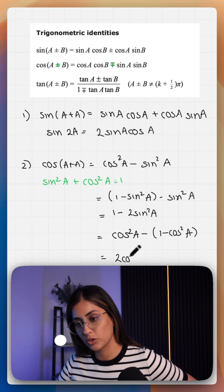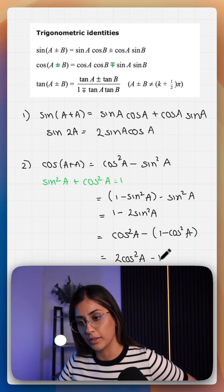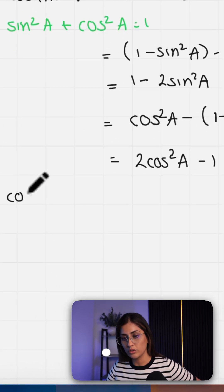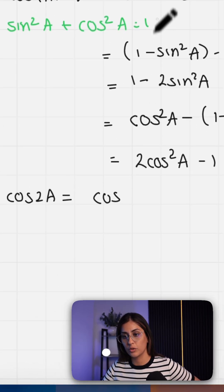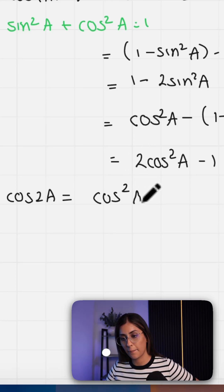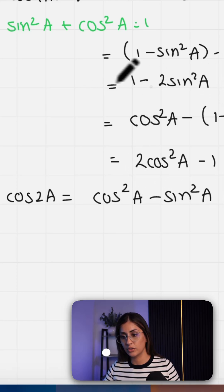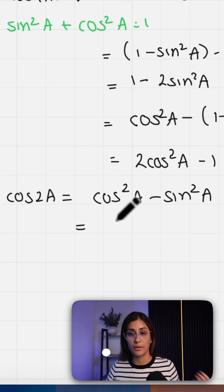That's two cos squared a minus one. So your cos double angle formulas are your original one, cos squared a minus sine squared a, and then these two that we've derived from our year one identity.